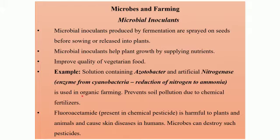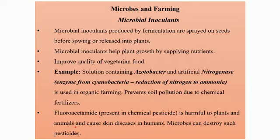These kinds of microbes are used for organic farming because they act as bio-fertilizers. We are not adding any chemical fertilizers, and these microbes even prevent soil pollution due to chemical fertilizers. Fluoroacetamide is a chemical present in chemical pesticides that is harmful to plants and animals and even causes skin diseases in humans. The function of microbes is to destroy such pesticides. These are some examples of microbes that are useful in farming.